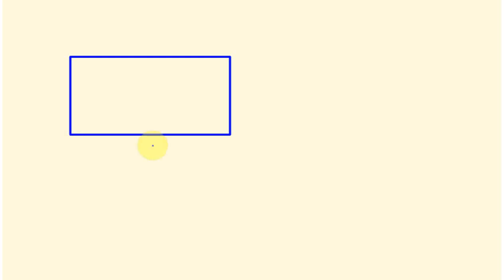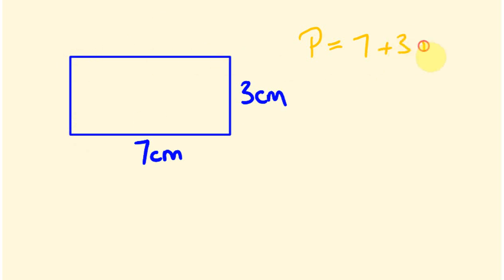I'll give you an example using a rectangle to show how algebra works. Say we have a rectangle where the side length is 7 centimeters and the other side is 3 centimeters. If we wanted to work out the perimeter, we do it as follows: P equals 7 plus 3 plus 7 plus 3, which gives us 20 centimeters. That's fairly easy — we're just adding the sides together.